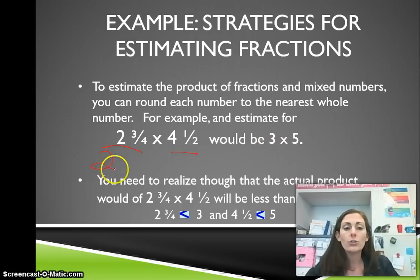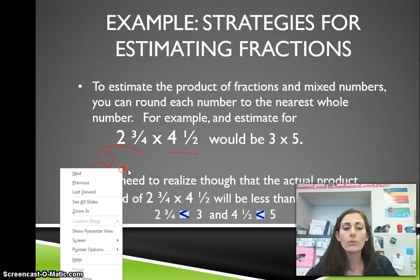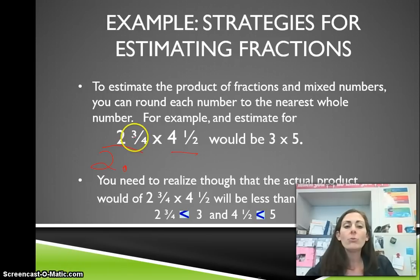If we were to take 2 wholes and 3 fourths, you see fourths, when you see fourths you need to think of quarters, because you need 4 quarters to make a dollar. So 3 of those would be 75 cents. So you have 2 and 75 hundredths, which a good estimate would be 3.